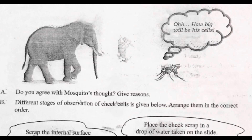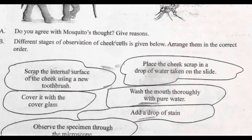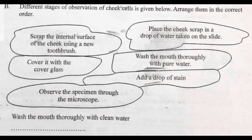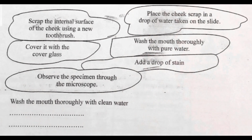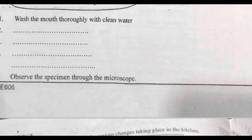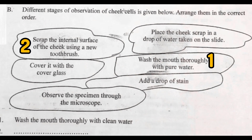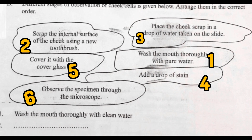Second question: arrange the different stages of observation of cheek cells in the correct order. First, wash the mouth thoroughly with clean water. Then scrub the inner parts of the cheek using a toothpick. Place the cheek scrub in a drop of water on a slide, add a drop of stain, cover it with a cover glass, and finally observe the specimen through the microscope.